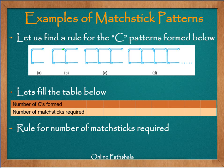We have to find out a rule for the C patterns formed below. You can see that we have formed four types of C patterns. The way we approach this is we make a table showing how many Cs are formed and how many matchsticks are required.